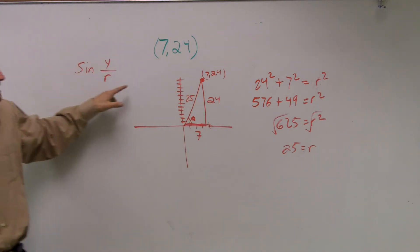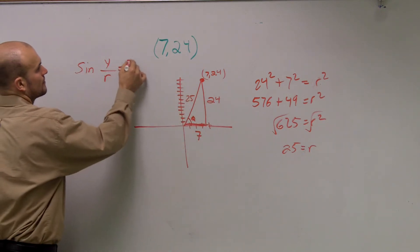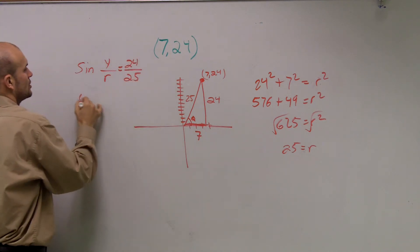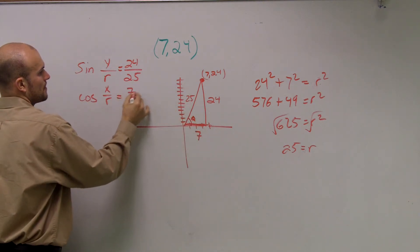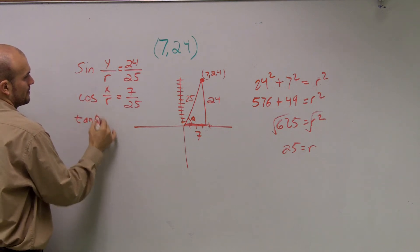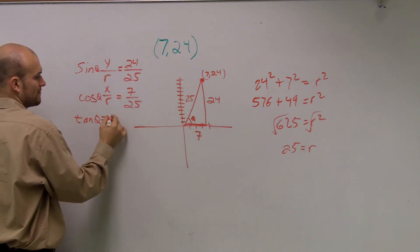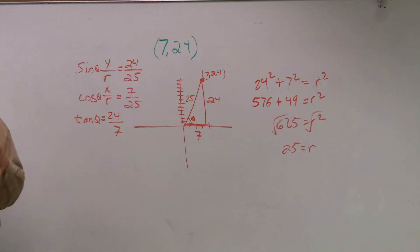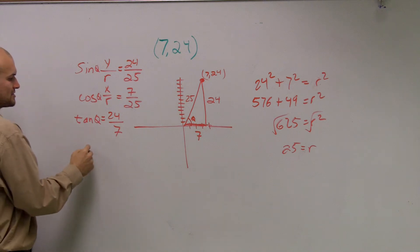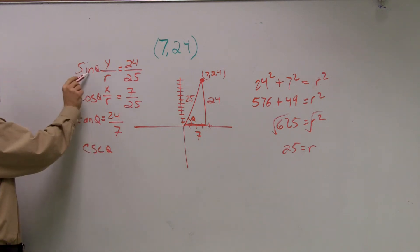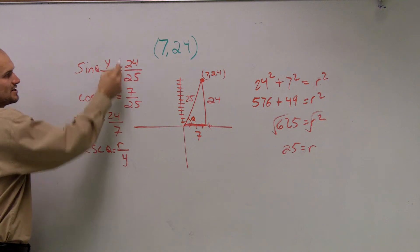To find sine, I take the y value, which is 24, over the hypotenuse, which is 25. Cosine is x over r, so that's 7 over 25. Tangent of theta is opposite over adjacent, so it's 24 over 7. Those are your three main trig functions. For the reciprocal functions, cosecant is the reciprocal of sine, so rather than y over r it's r over y — just flip it — giving 25 over 24.